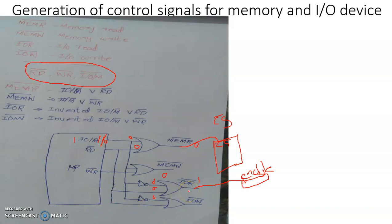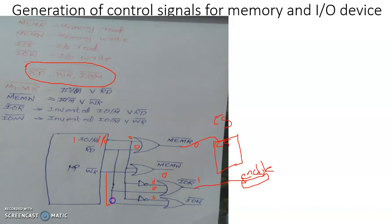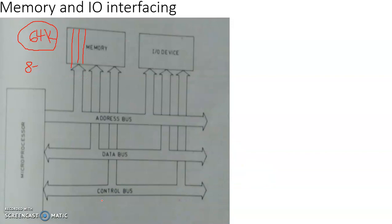By the OR operation of the negated IO/M̄ line and RD̄ directly, we are able to produce the active-low IOR̄ signal for enabling the IO device being accessed by the microprocessor to perform a read operation. Similarly, for a write operation of an output device, we generate an active-low IOW̄ signal by the OR operation of the negated IO/M̄ line and WR̄ line.